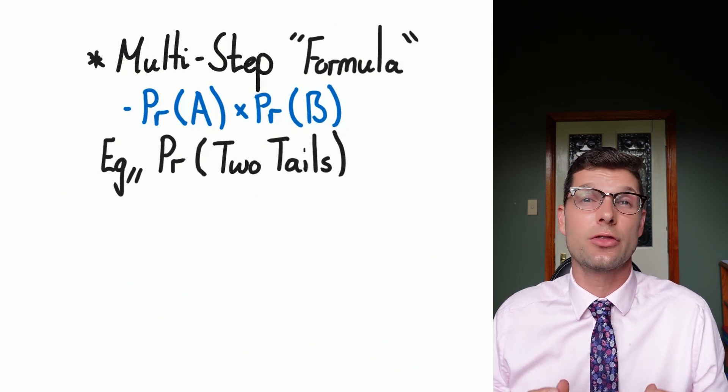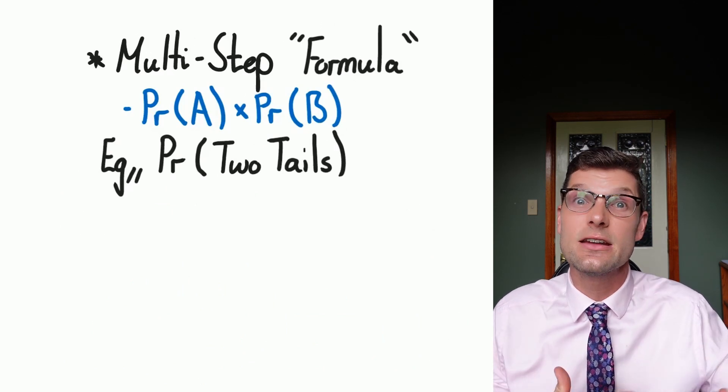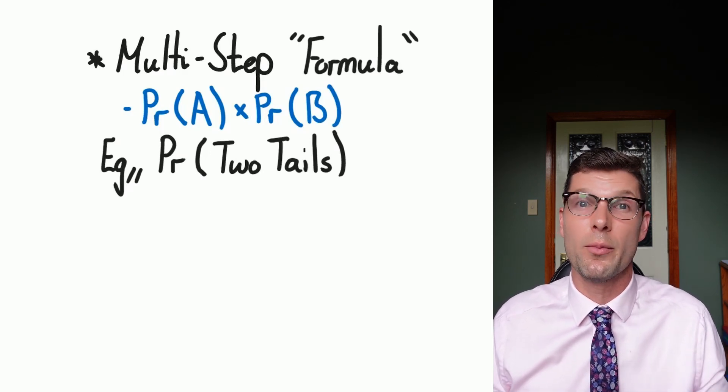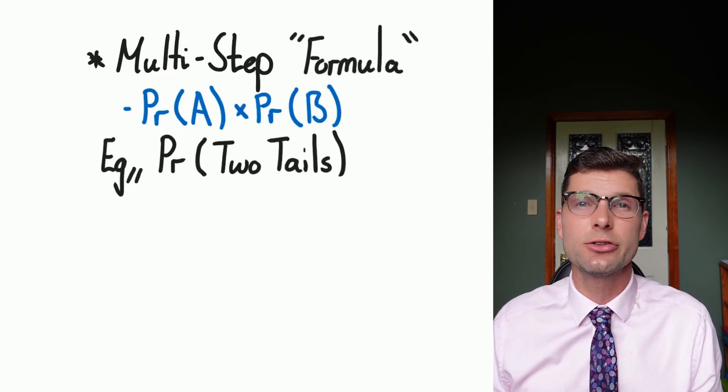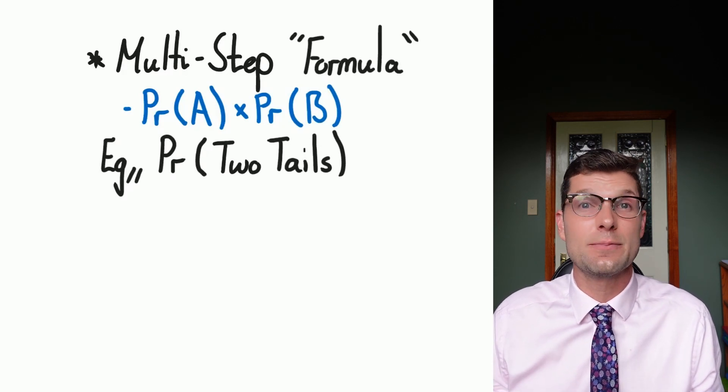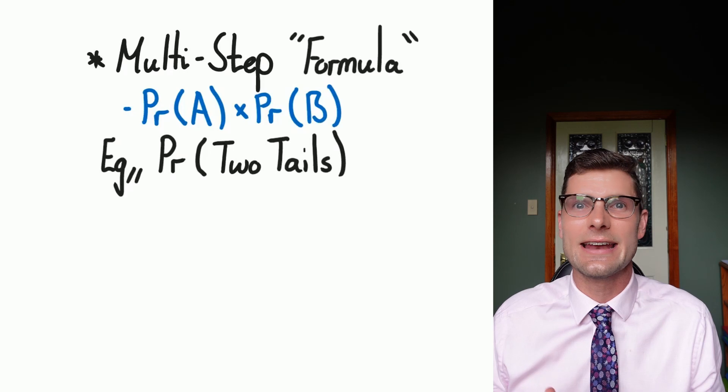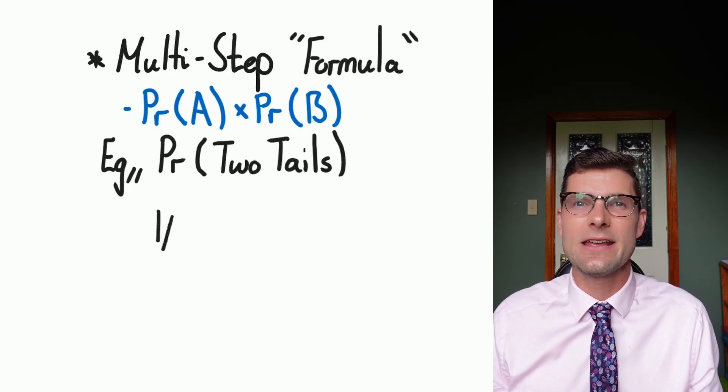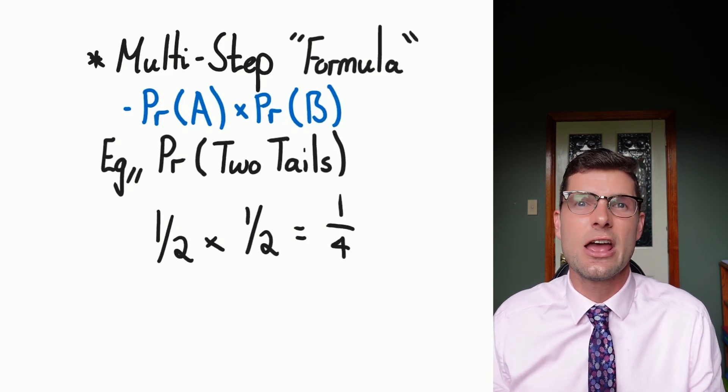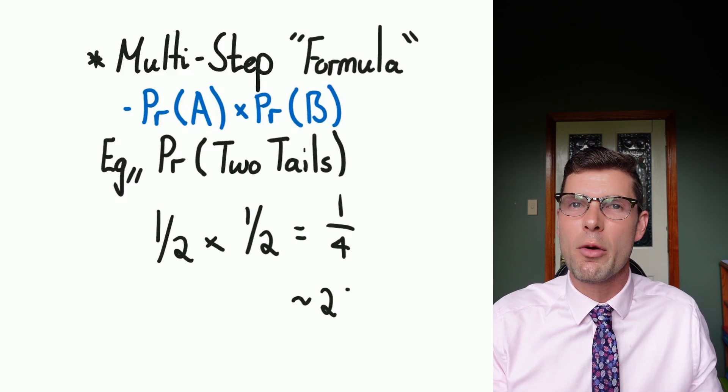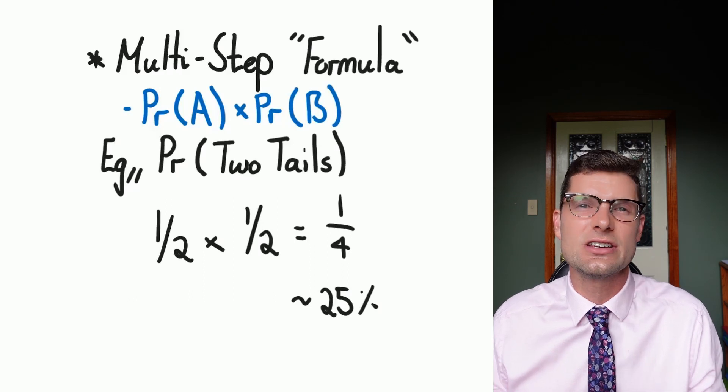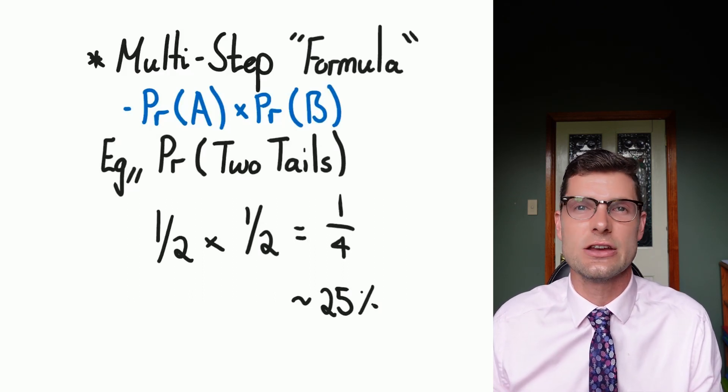The formula for finding the probability that two or more things happen in a certain order is just the probability of A multiplied by the probability of B. So one of the easiest examples: if you flip two coins up in the air and you need to get tails twice, the probability of that happening is a half multiplied by a half, which equals a quarter or about 25%. We just have to work out one little thing that could change our result.